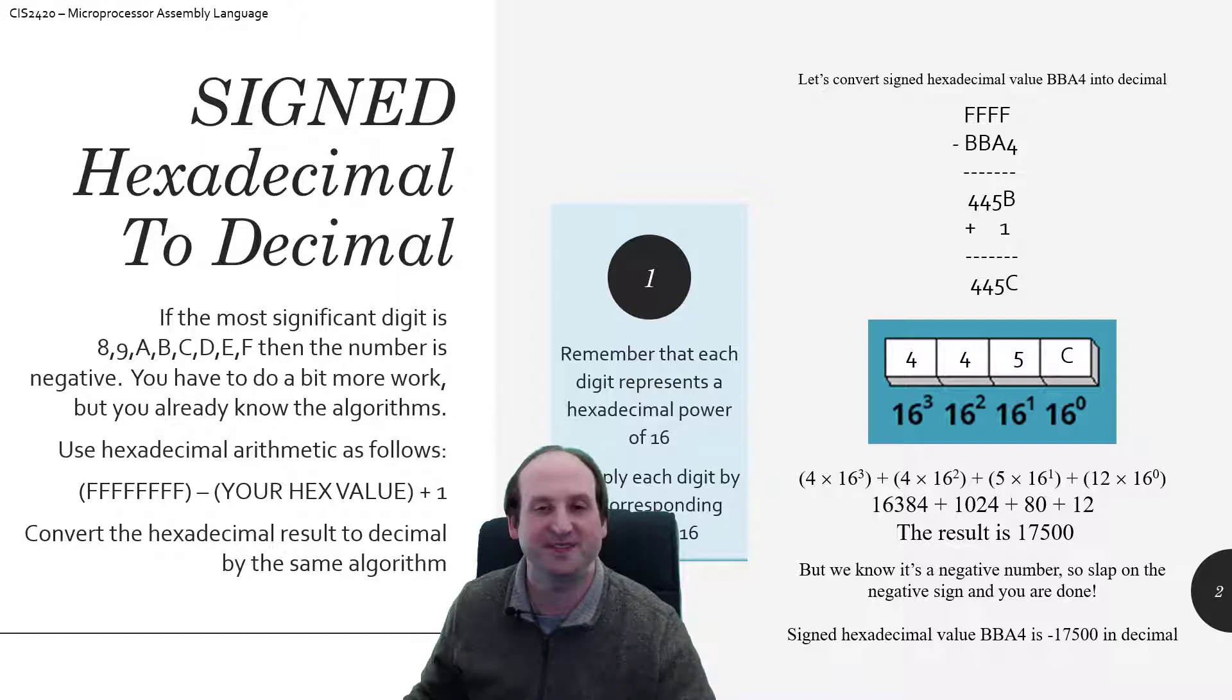4, 4, 5, C is the 2's complement additive inverse of that number. So whatever number 4, 4, 5, C is, that's the positive, that's the magnitude of the negative number that this thing actually represents.